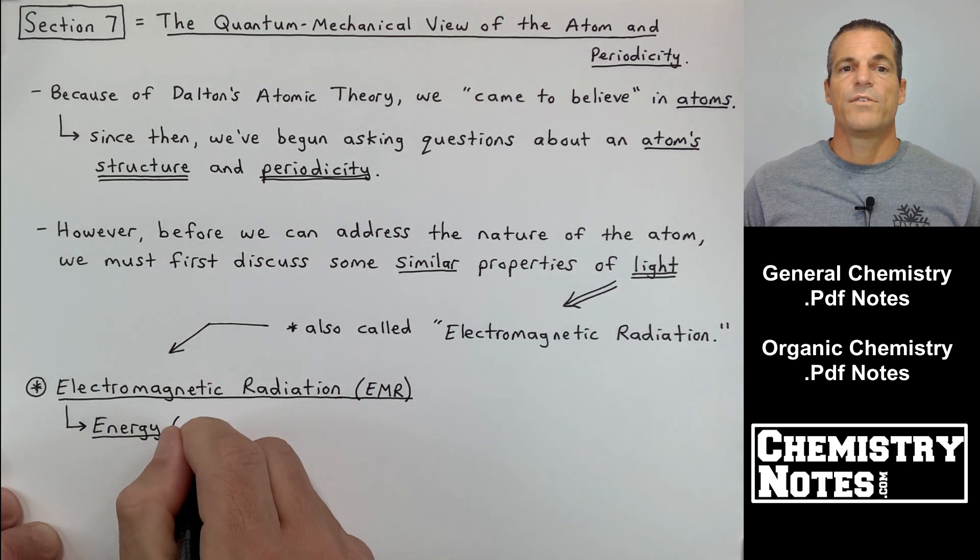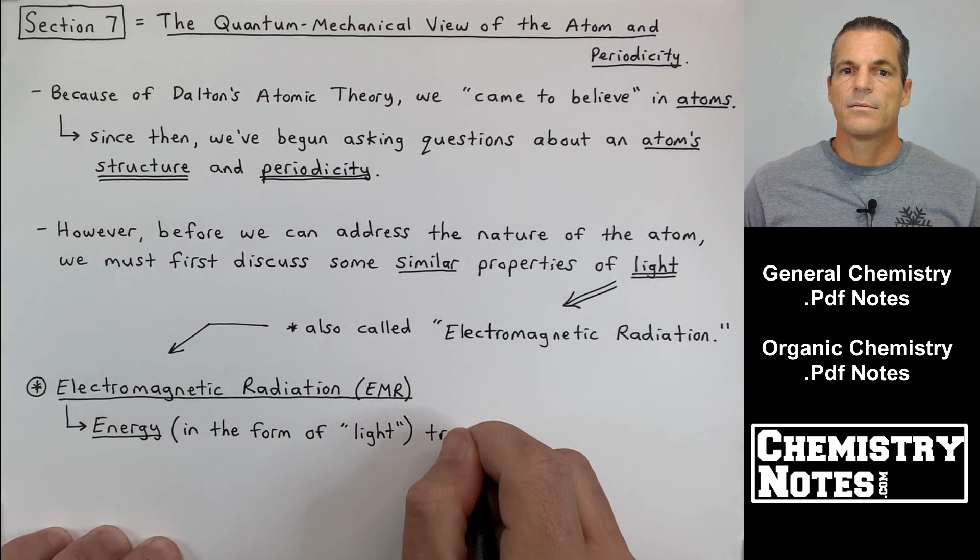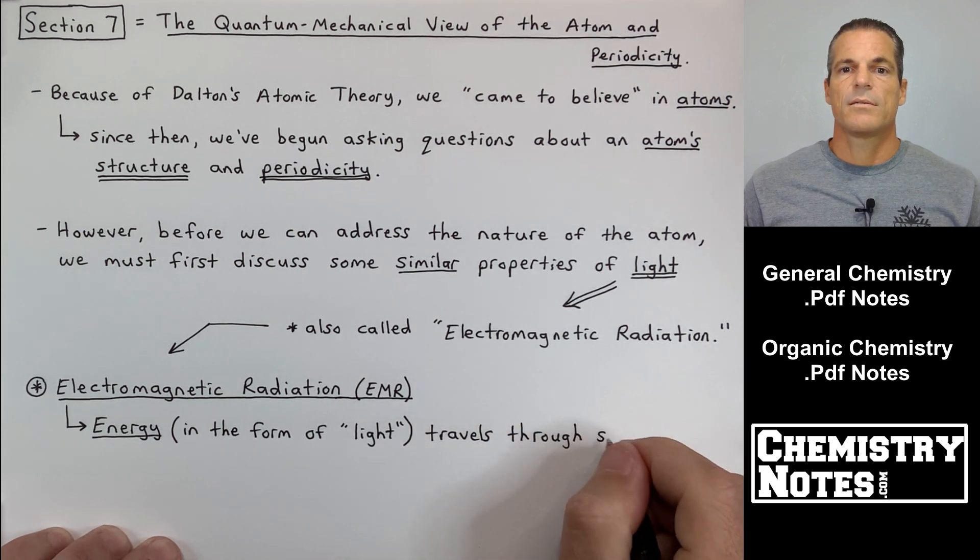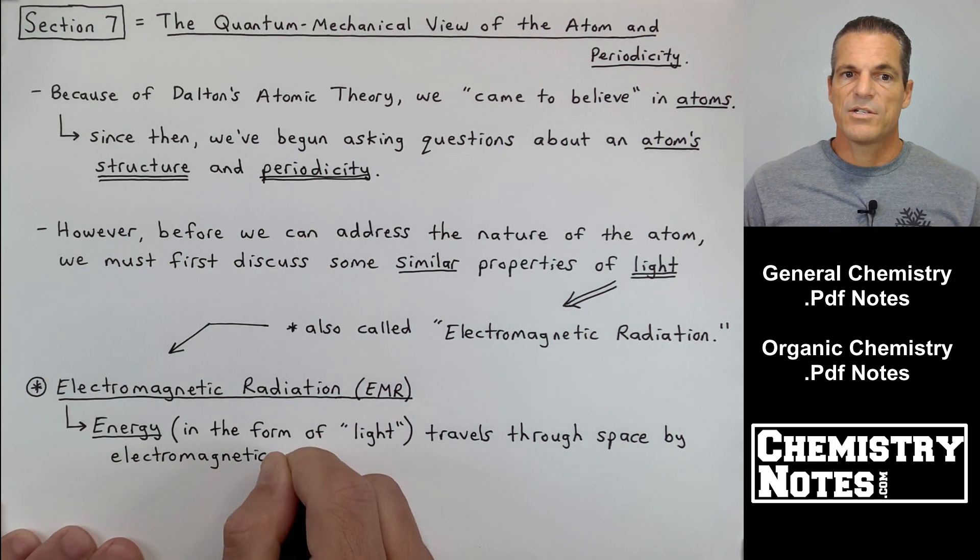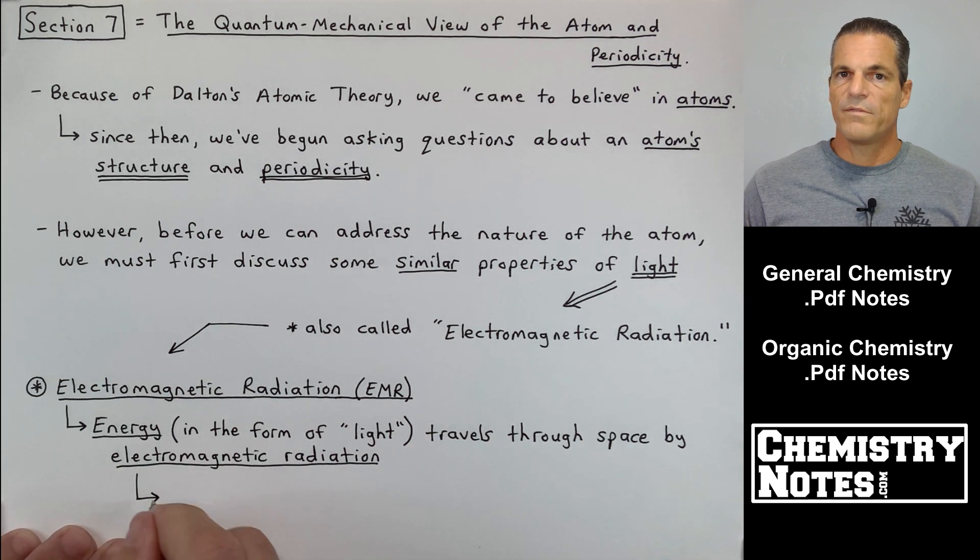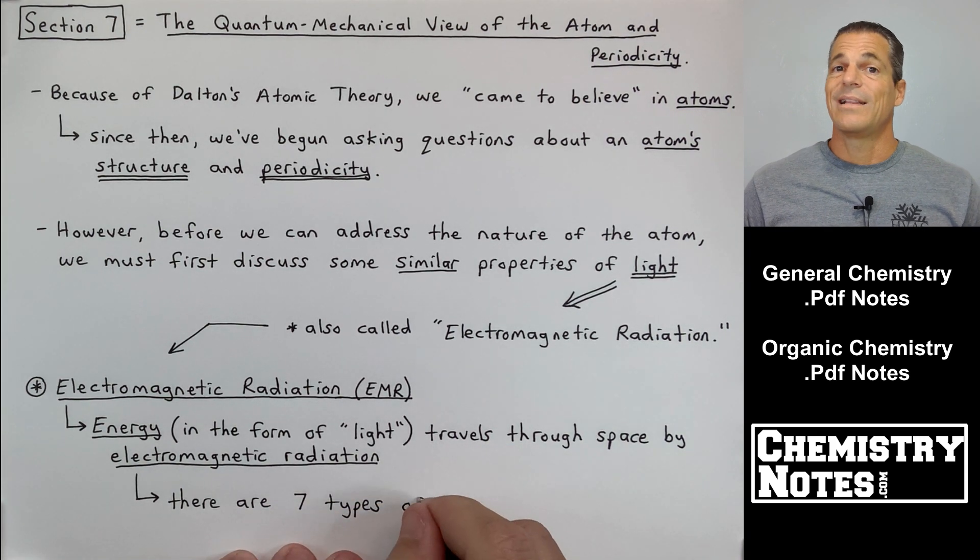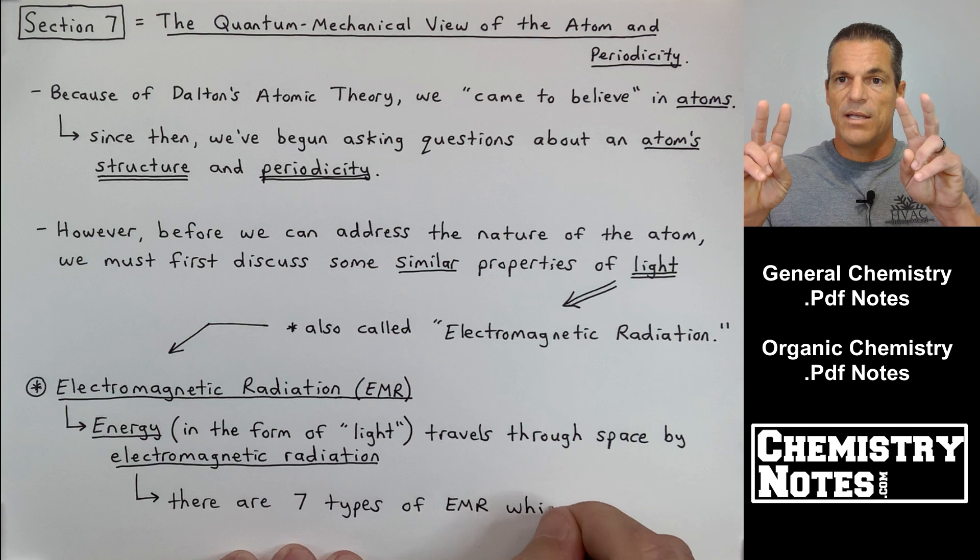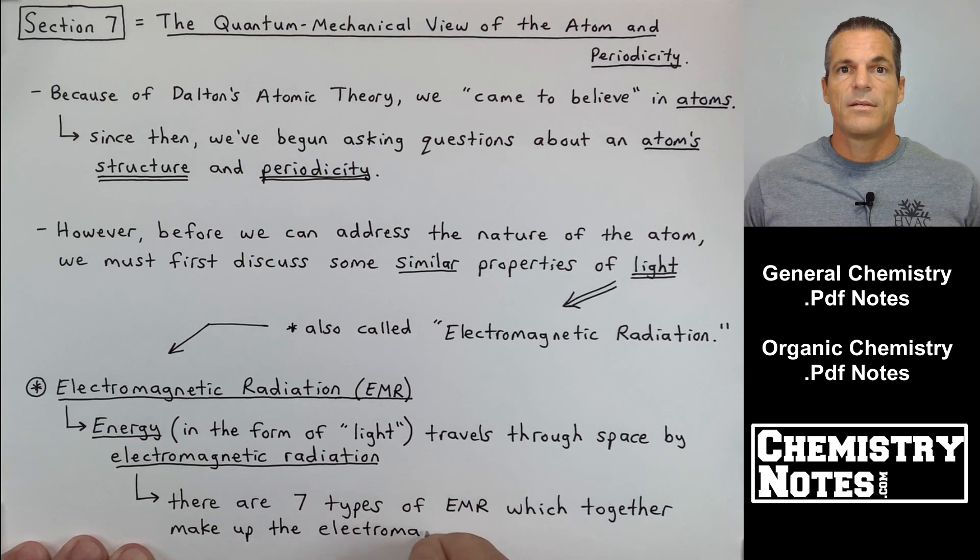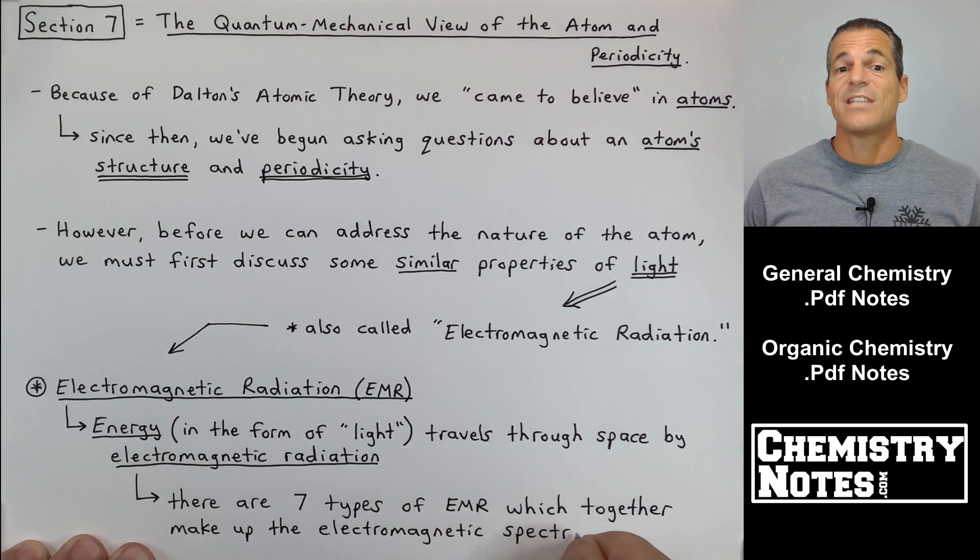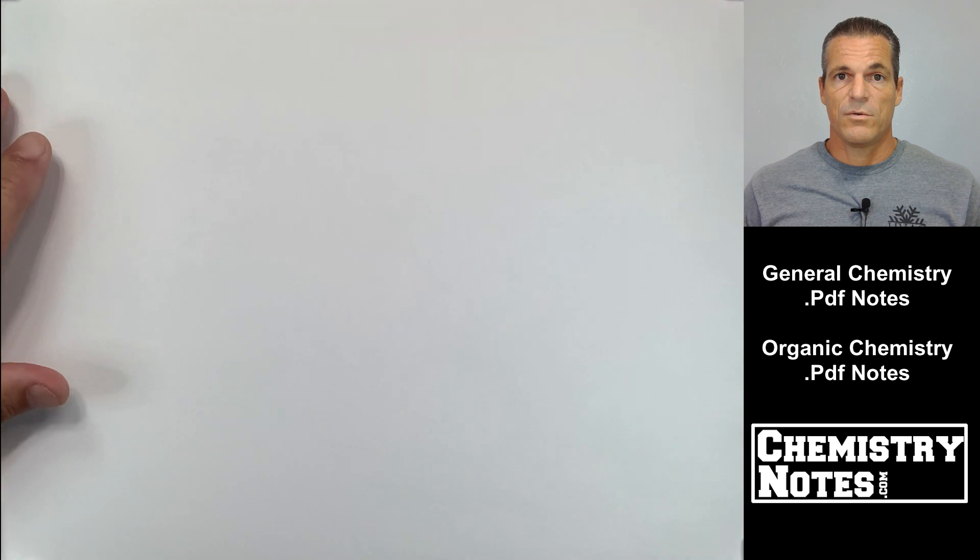A few notes on electromagnetic radiation: energy in the form of light travels through space by electromagnetic radiation. Now we're going to elaborate on the next page on what it really means to be light. It's not just visible light. There's a whole bunch of different types of radiation that classify into electromagnetic radiation. In fact, there are seven types.